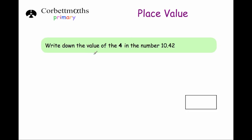Our next question says: write down the value of the digit 4 in the number 10.42. We've got 1 ten, no units, 4 tenths and 2 hundredths. Because the digit 4 is in the tenths column, it's going to be 0.4 — 4 tenths.